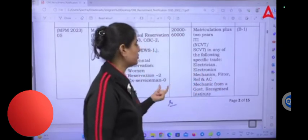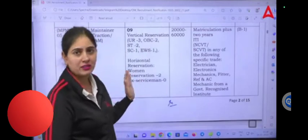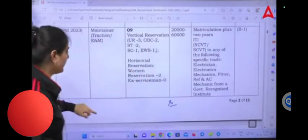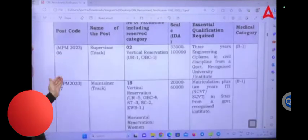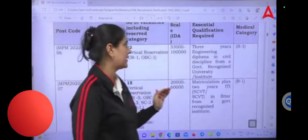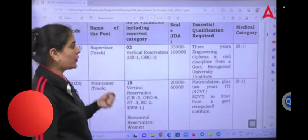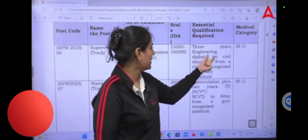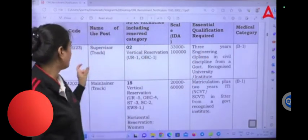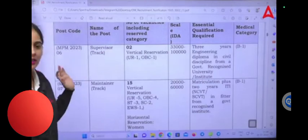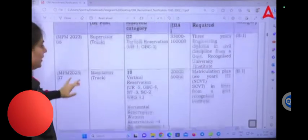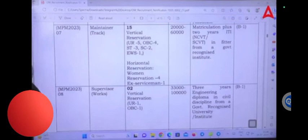If you have a degree from a government recognized institute or university, you can apply for the maintainer post. Medical category is available. Next is Supervisor with 2 posts, salary 30,000. Three years engineering diploma is required. For this supervisor track, they have written civil discipline, so civil students can apply for the supervisor track post.